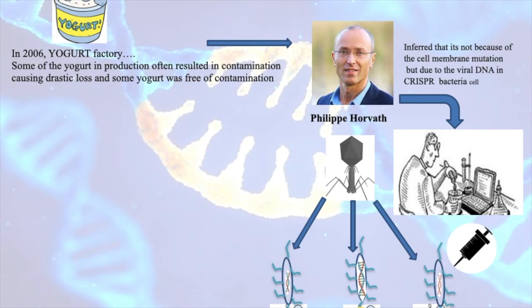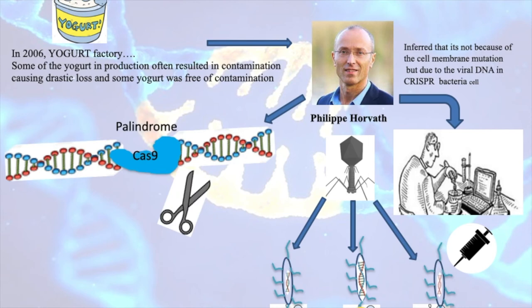He was also able to find out that in continuation of the palindrome sequence, there was a Cas9 protein. The function of Cas9 is to act as a molecular scissor, helping to cut at the desired sites. He proved that bacteria have adaptive immunity, and you can alter the DNA along with it to help bacteria prevent infection further.